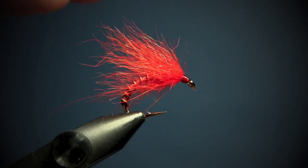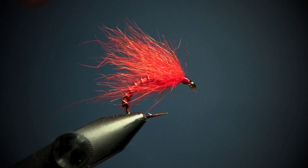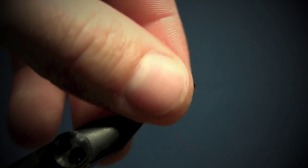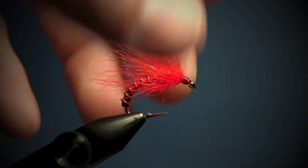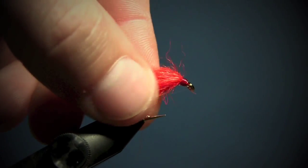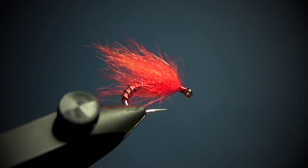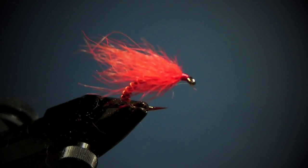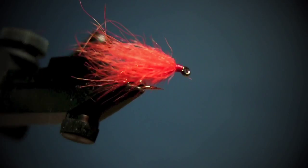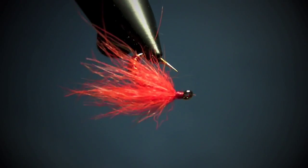Sometimes in size 8, 10, even 12. But yeah, this is a great fly. I have caught a lot of sea trout on it and it's so easy to tie and so efficient. So yeah, there you go, Klimpen.